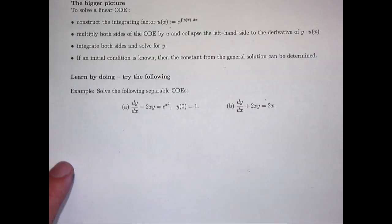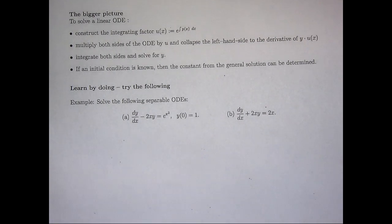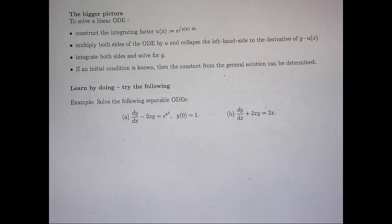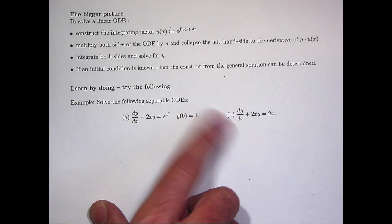Let's have a look at the bigger picture — here's a step-by-step analysis of the solution method. The underlying process is the product rule for differentiation, collapsing the left-hand side to the derivative of a special product. Construct the integrating factor, multiply both sides of your ODE by it, collapse the left-hand side, integrate both sides, solve for y, and if you know an initial condition, determine your constant of integration.